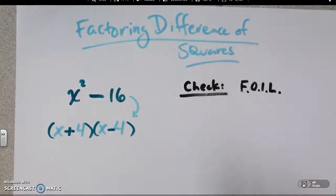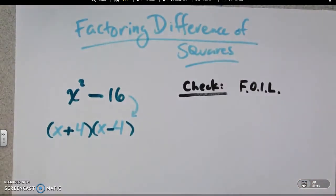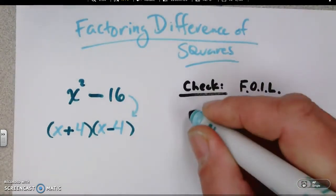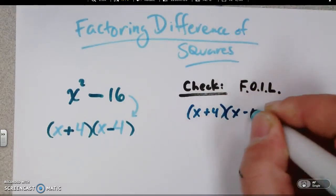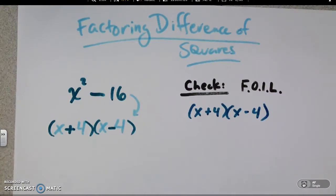So we took this and we factored it to get to there. Now what we want to do is go backwards. So in other words, if we had x plus 4, x minus 4, let's go ahead and FOIL this to check it.